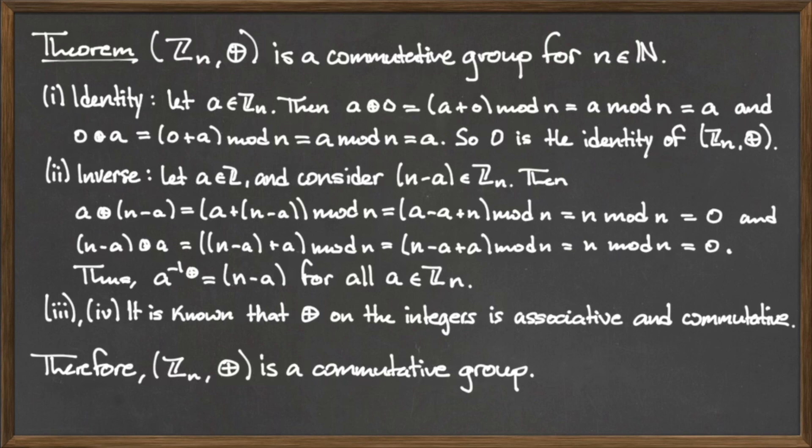Since the set of integers mod n under the binary operation ⊕ satisfies all four requirements, it is therefore a commutative or abelian group.